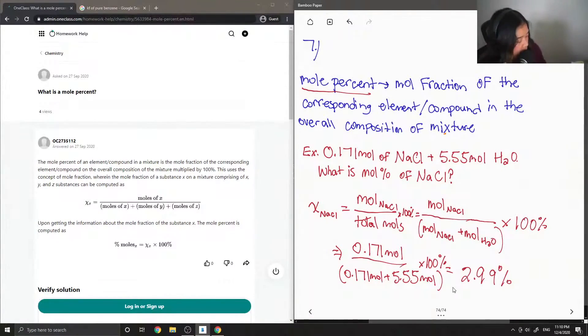Okay, so let's see what the junior tutor said. The mole percent of an element or compound in a mixture is the mole fraction of the corresponding element slash compound on the overall composition of the mixture multiplied by 100.